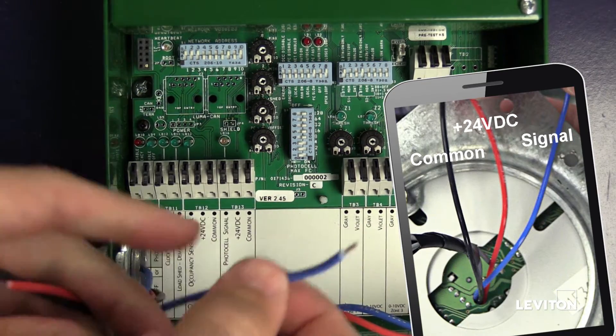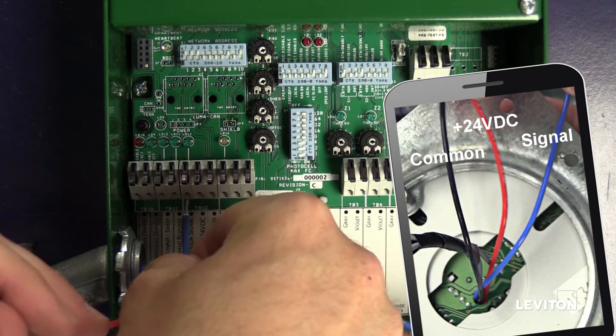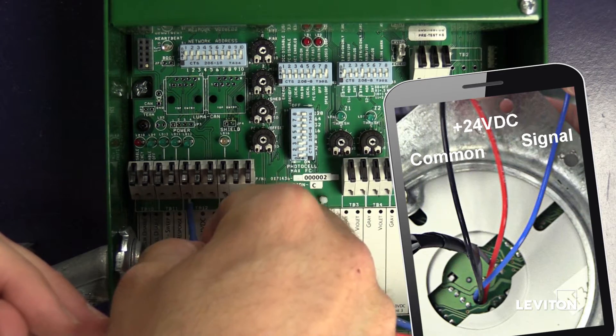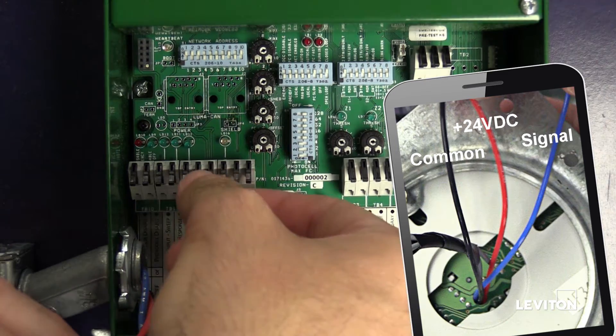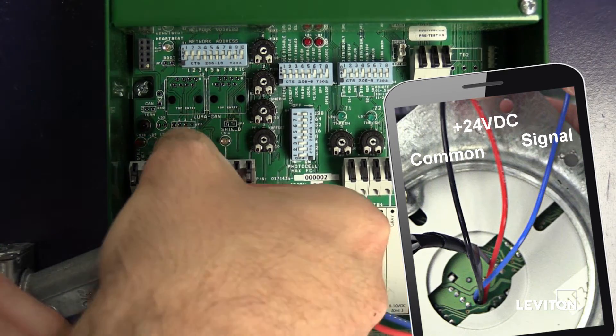Land your occupancy sensor signal wire onto the connector labeled Occupancy Sensor Signal. Press the locking mechanism to secure the connection.